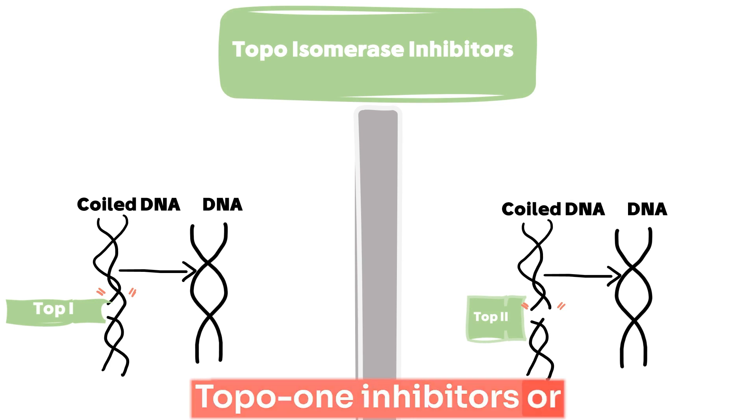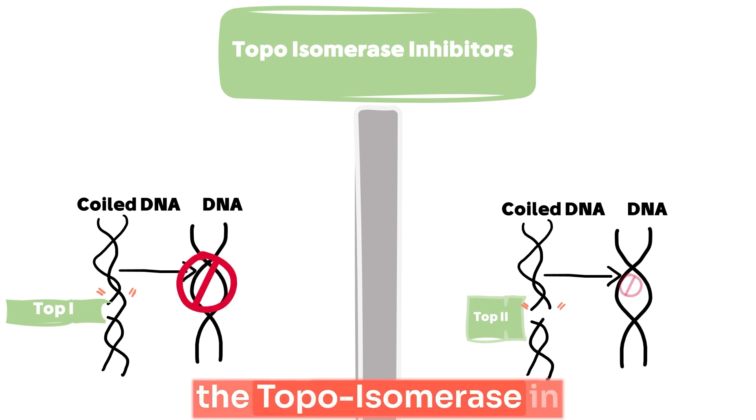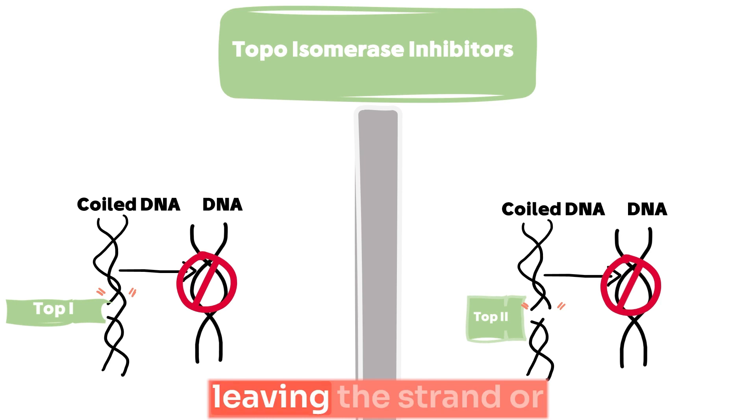Whether topo-1 inhibitors or topo-2 inhibitors, both act by trapping the topoisomerase in an intermediate step, preventing it from leaving the strand or completing its function.